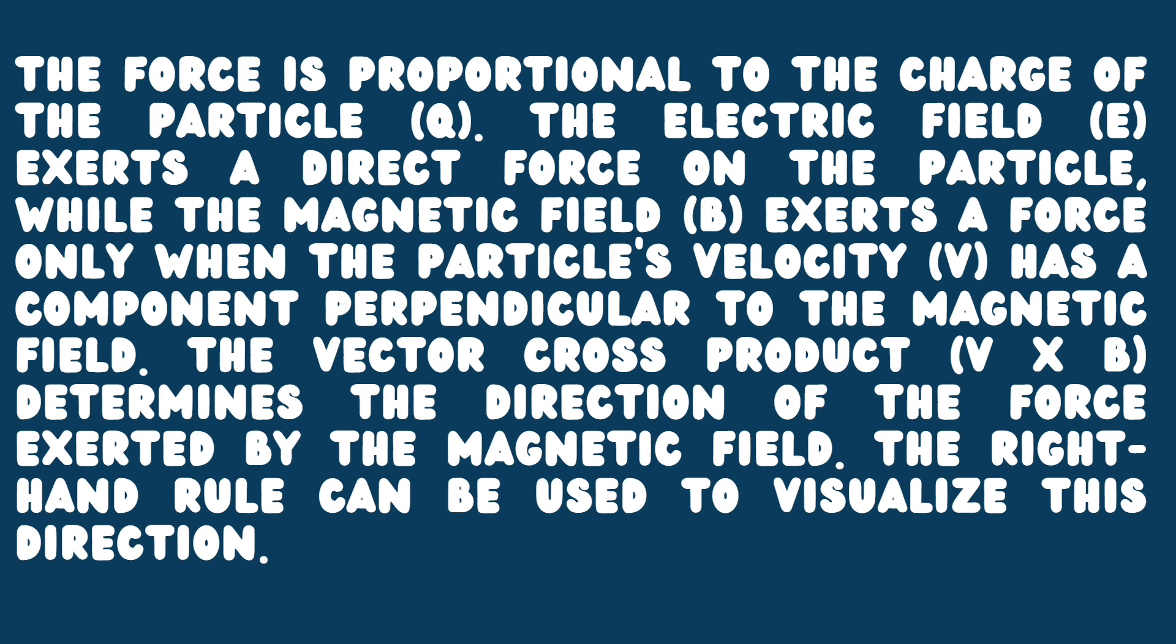The vector cross product, which is the V times B, determines the direction of the force exerted by the magnetic field. The right-hand rule can be used to visualize this direction.